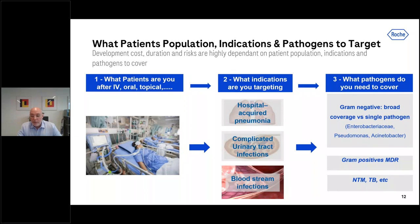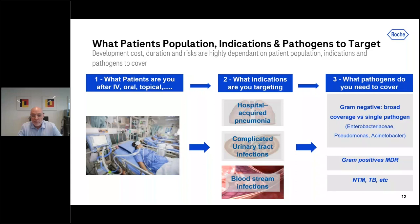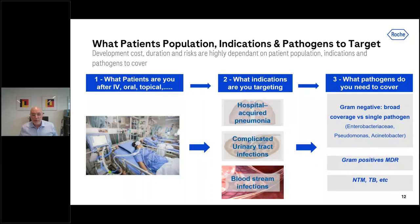Another example would be mycobacteria — NTM or tuberculosis — and thinking about how that would change the length of treatment and therefore safety profiles of specific molecules. Thinking about these things early on helps to set a list of criteria required for the progression of specific molecules through the early discovery phase.